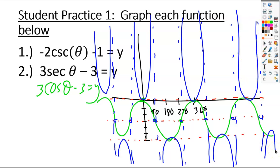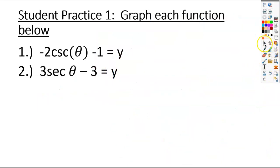That's graphing secant and cosecant. Basically, it's just two more steps than graphing regular sine and cosine functions — the extra two steps are putting in vertical asymptotes and then throwing the little parabolas on there, and that's it. We'll put that to practice in class next time. Until then, have a good one.